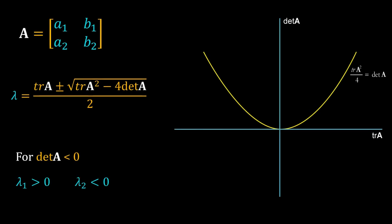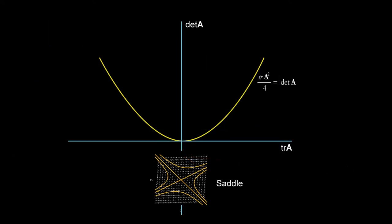That is why we perform stability analysis of a two-dimensional system on a trace-determinant plot. Consider det(A) less than zero — that means we are below the trace axis. Since det(A) is negative, the term under the square root is positive and bigger than trace(A), so one eigenvalue will be positive and the other negative. Therefore, irrespective of the value of trace(A), we will get a saddle.